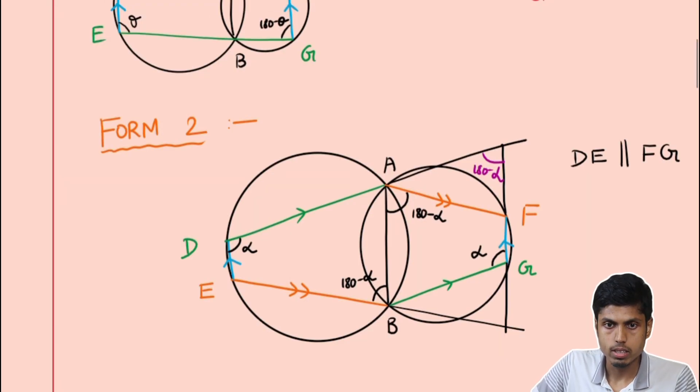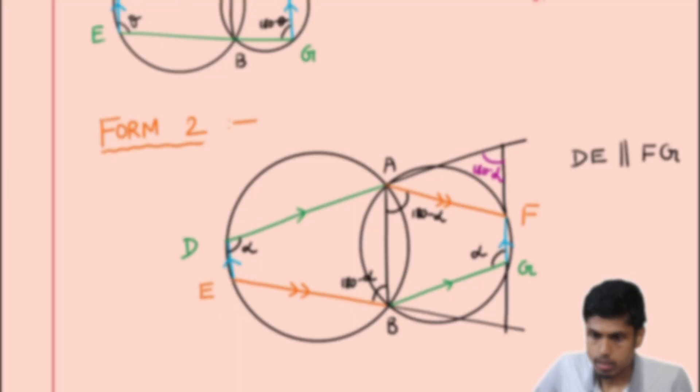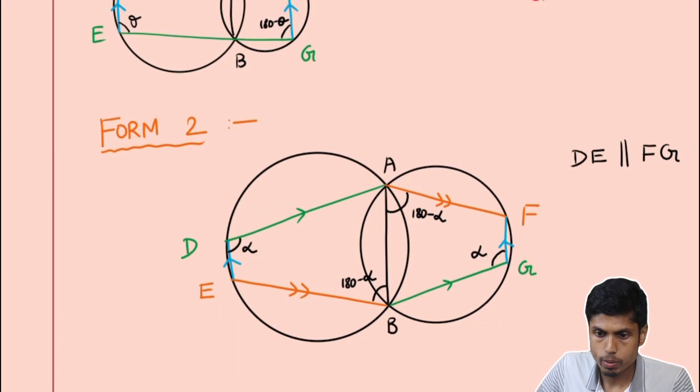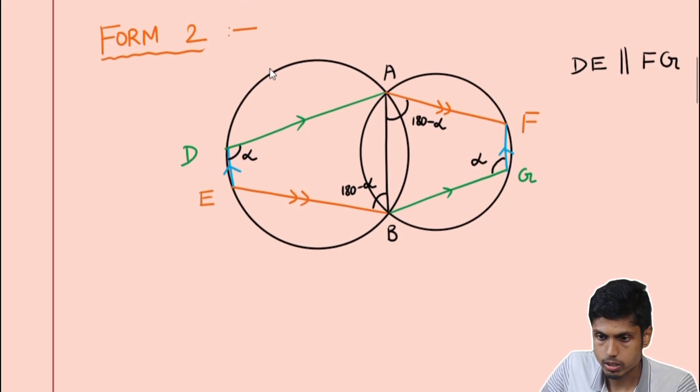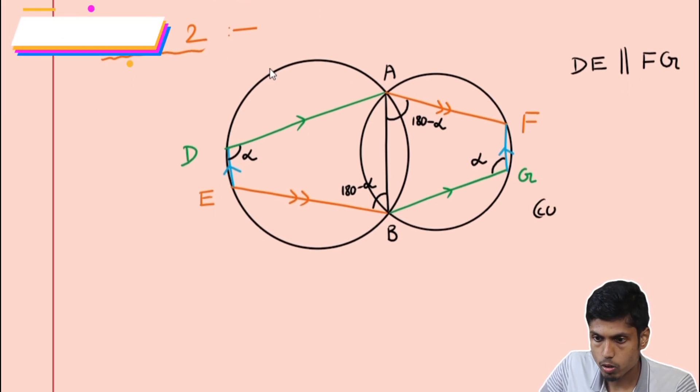So we get DE parallel to FG as displayed, because this is just extension of the line FG. So now this is one possible configuration. There could be another configuration.